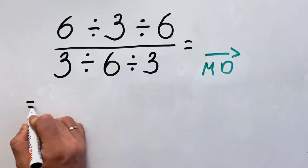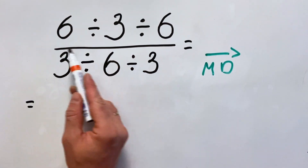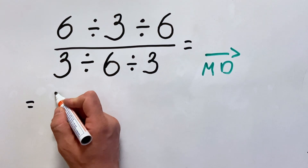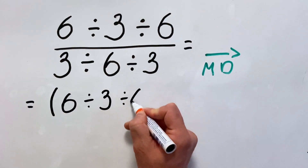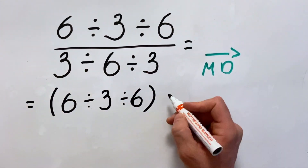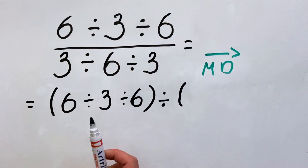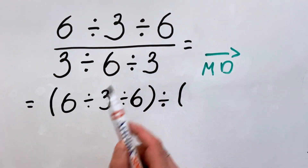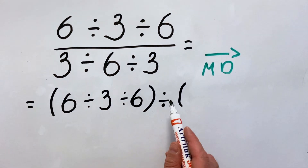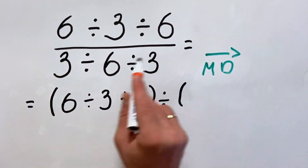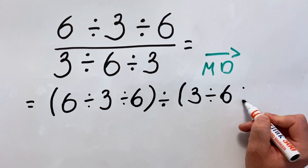To solve this more easily, we will take the ratio bar as division, because that is what it is. So we write this equation as 6 divided by 3 divided by 6. This bar is also a division. We have the numerator on the top of the fraction and the lower side is the denominator. We write the numerator as an operation in parenthesis, then division over this entire operation: 3 divided by 6 divided by 3.